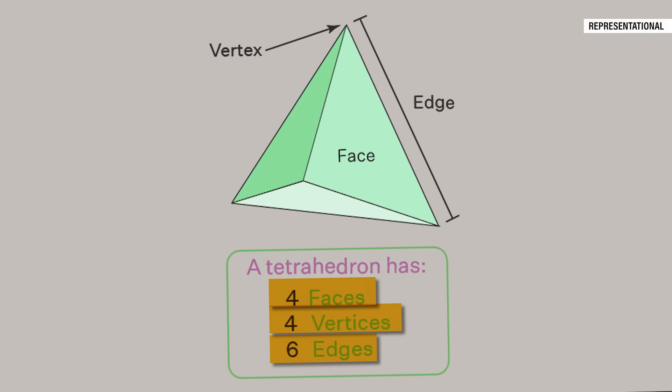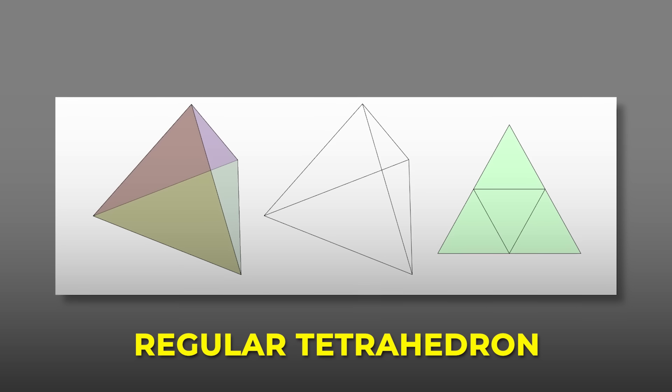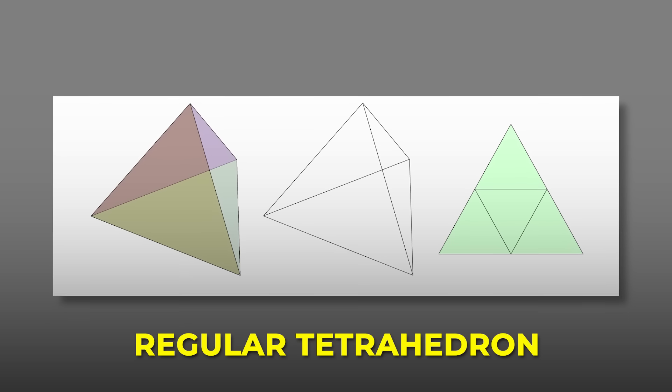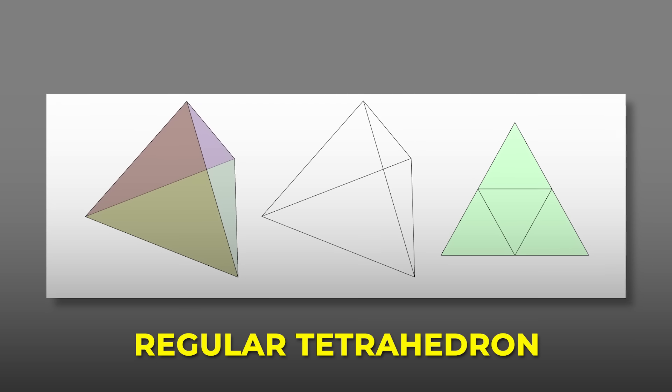It is also known as a triangular pyramid. A regular tetrahedron has four equilateral triangles as its faces and all edges having the same length.